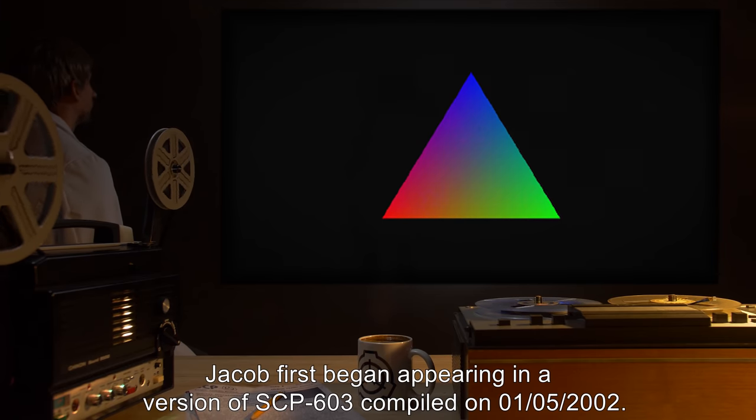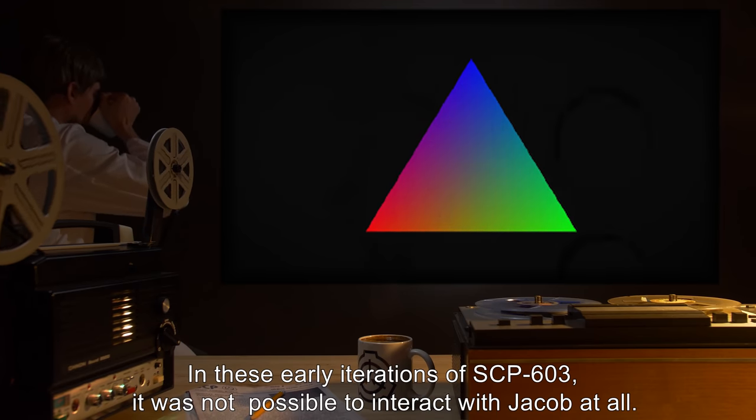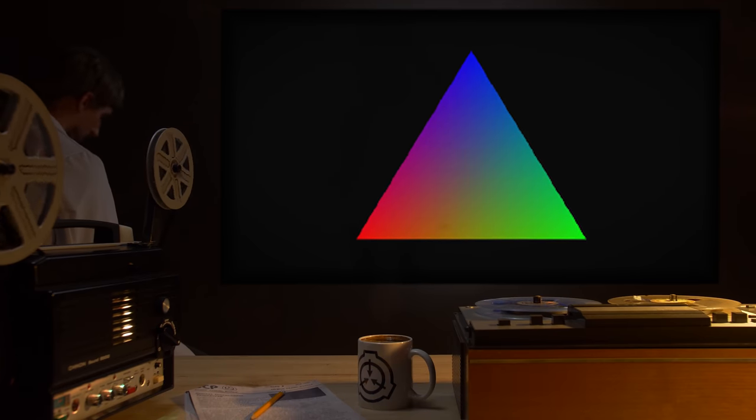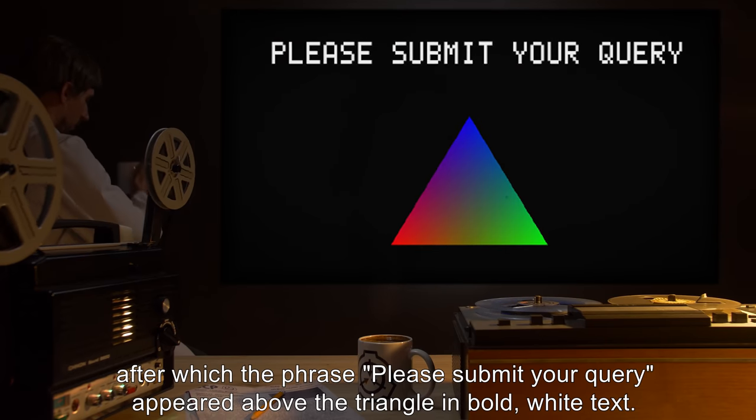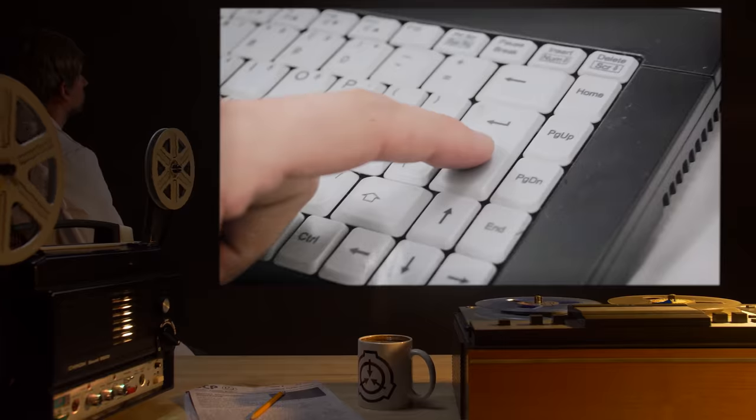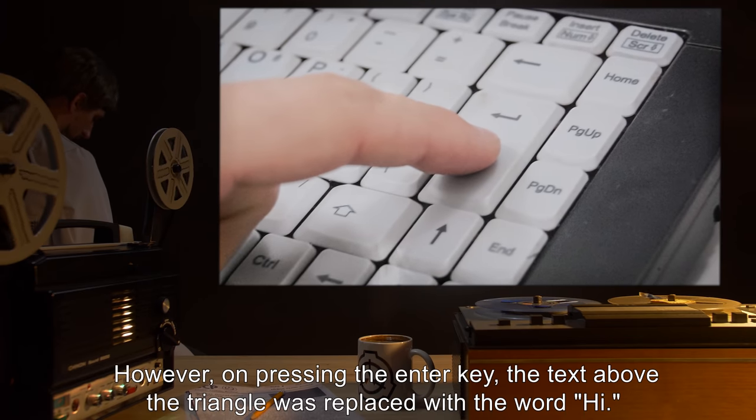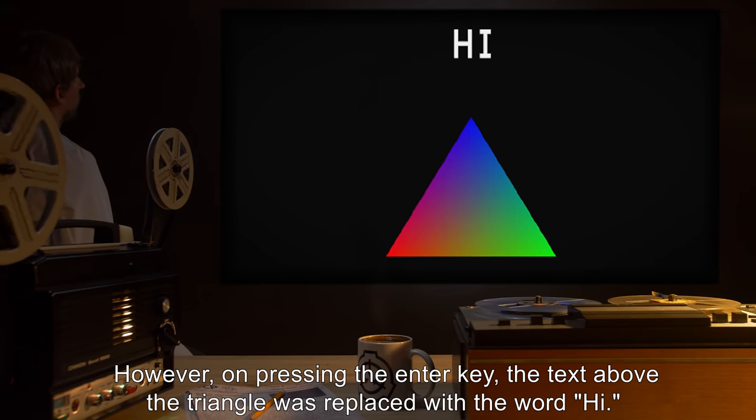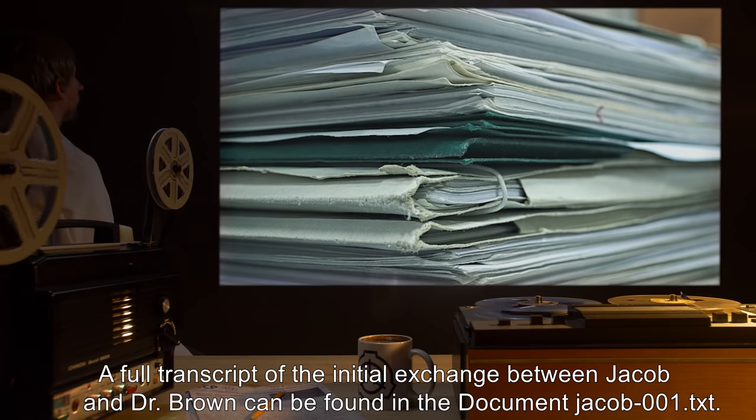History of Jacob: Jacob first began appearing in a version of SCP-603 compiled on 01-05-2002. In these early iterations, it was not possible to interact with Jacob at all. At this time, Jacob was simply known as the Triangle. On 09-09-2004, Jacob was left running for 12 minutes by Dr. Brown. After which, the phrase Please submit your query appeared above the triangle in bold white text. Dr. Brown proceeded to type the word Hello. The program display gave no indication that key presses were being handled. However, on pressing enter, the text above the triangle was replaced with the word Hi. A full transcript of the initial exchange between Jacob and Dr. Brown can be found in the document jacob-001.txt.